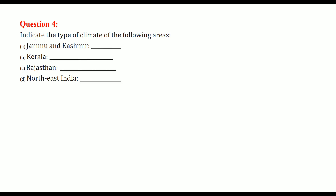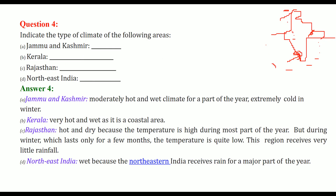Indicate the type of climate in these areas. Jammu and Kashmir is moderately hot, not very hot. It has a wet climate also because it rains. But in winter it's extremely cold, very cold, not as cold as upper latitudes, but still very cold. Kerala is very hot and wet as it's a coastal region.